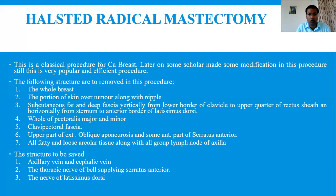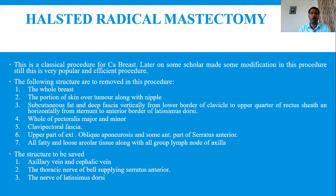The whole breast should be removed — meaning complete breast tissue, the portion of skin or tumor involved, tissue adhering to the mass, and maybe the nipple. For cosmetic reasons, don't try to save the nipple; it should be excised. The subcutaneous fat and deep fascia extend vertically from the lower border of the clavicle to the upper border of the rectus, and horizontally from the sternum to the anterior border of the latissimus dorsi.